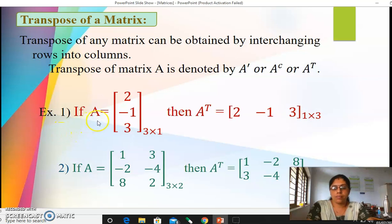Let's see one example. This is an example of a column matrix, it has three rows and one column. So how to write its transpose? It is simply, we have to just interchange row into column.